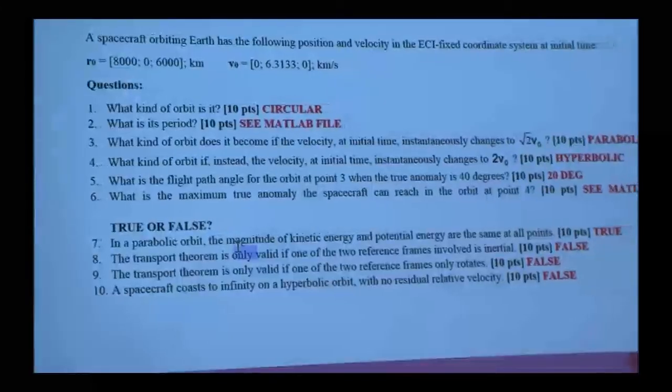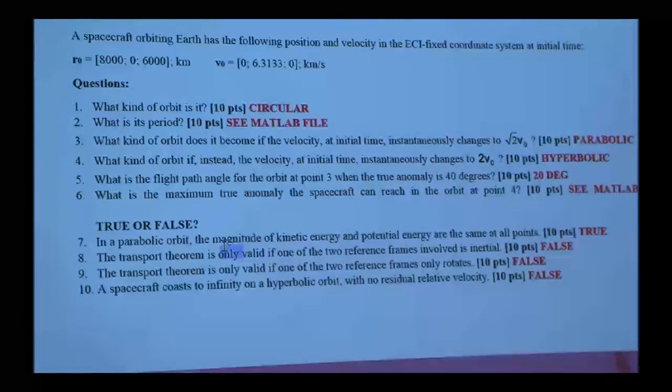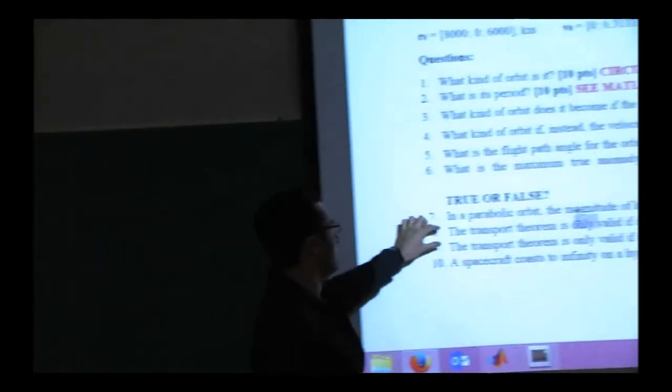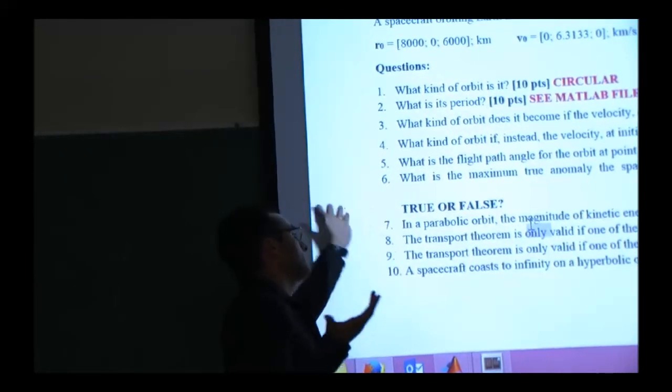A student asked if true/false questions are common on tests. The instructor said they didn't know in advance - they just felt like using them this time. Students should expect the same kind of structure: homework prepares you for what to expect. The two questions about dynamics were worth 20 points total and should be straightforward if you know dynamics well. The two astrodynamics questions require specific astrodynamics knowledge. True/false questions are a little dangerous since a wrong answer costs 10 points, but the line has to be drawn somewhere.